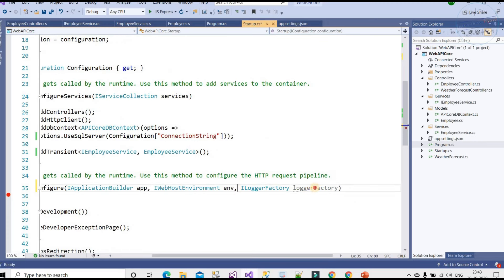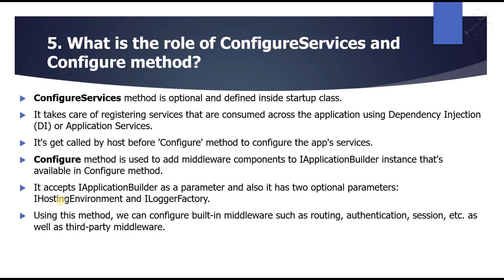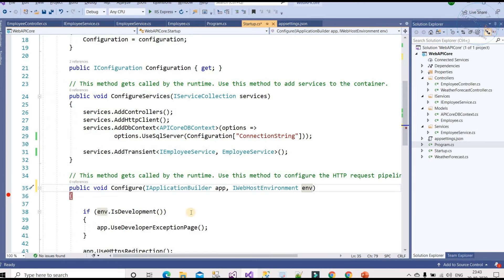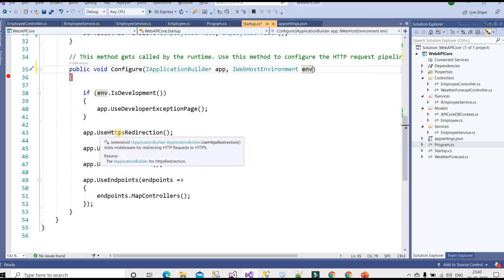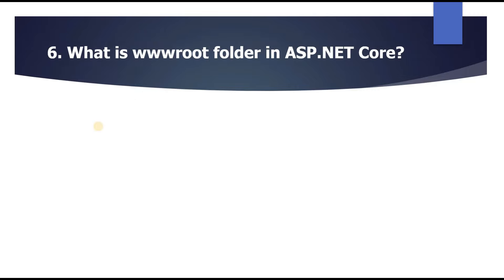Using the Configure method, we can configure built-in middleware such as routing, authentication, session, etc., as well as third-party middleware. For example, we can use UseHttps, UseRouting, UseAuthorization, and app.UseSession. The Configure method also specifies how the app responds to HTTP requests and responses.